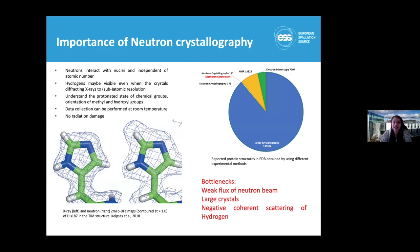Why do we really want to do neutron crystallography? We cannot study hydrogens with x-rays due to their inherent properties of lower electron density — they are not visible in x-rays. However, there are some x-ray structures at subatomic resolutions where you can see hydrogens, but not as clearly as in neutrons.